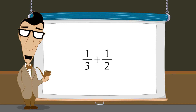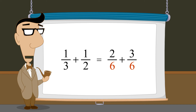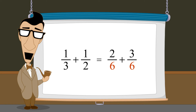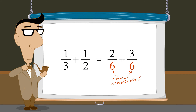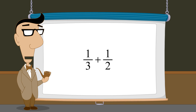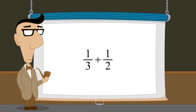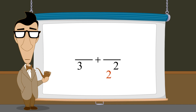So when adding or subtracting fractions with different denominators, we must find a single denominator which will work for all of the fractions. In other words, we must find a common denominator. Finding a common denominator is easy — we simply multiply each fraction's denominator by the denominator of the other fraction. This way, both fractions end up with a denominator equal to the product of the two denominators.